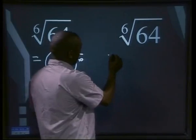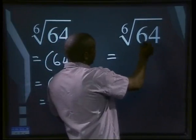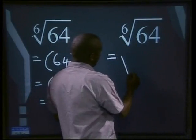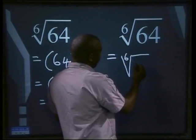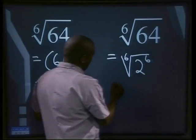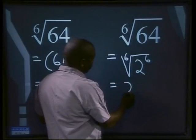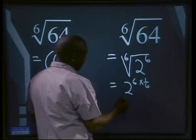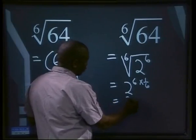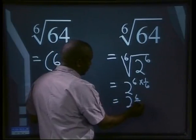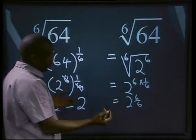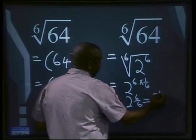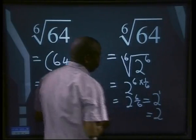The second method is to simplify 64 first inside the root sign. So we have the 6th root of 2 to the power of 6. That gives us 2 to the power of 6 multiplied by 1 over 6, which is 2 to the power of 6 over 6. We know 6 over 6 equals 1, so our answer is 2 to the power of 1, which is 2.